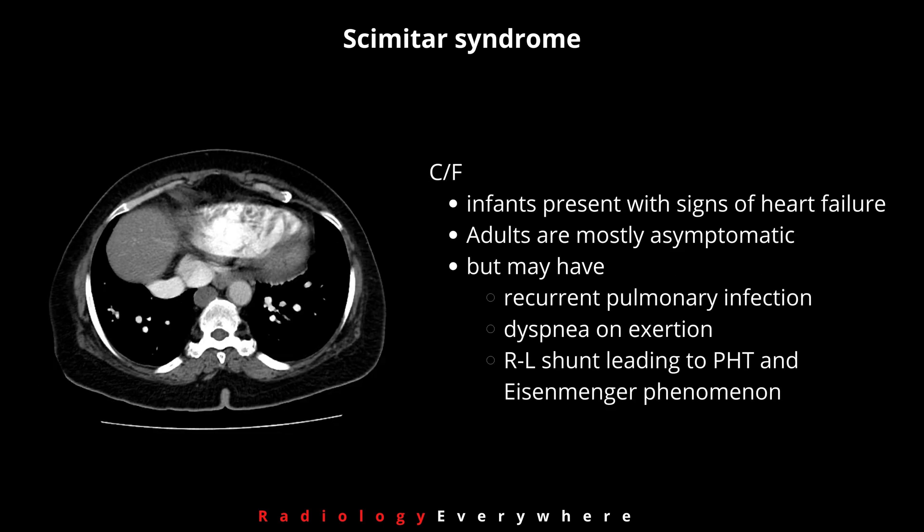When considering the clinical features of Scimitar syndrome, infants can present with signs of heart failure. Among adults, this is most frequently asymptomatic, but you can see recurrent pulmonary infections, dyspnea on exertion, and right-to-left shunt, which can lead to pulmonary hypertension and Eisenmenger phenomenon.